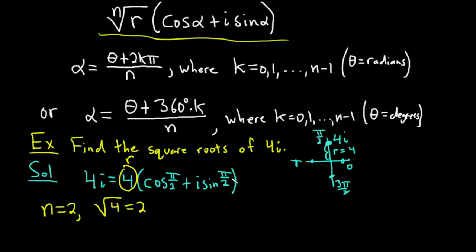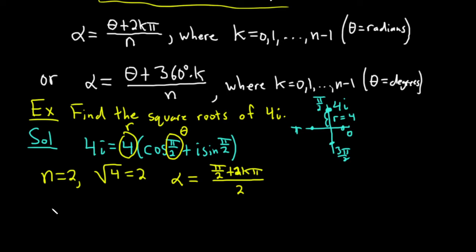So alpha is equal to theta plus 2k pi. So theta here is pi over 2. That's our theta. It'll be pi over 2 plus 2k pi over n. And again, n here is 2. So let's just find the different values now. When k is, well, k runs from 0 to n minus 1. So k is either 0 or 1, because n is 2.